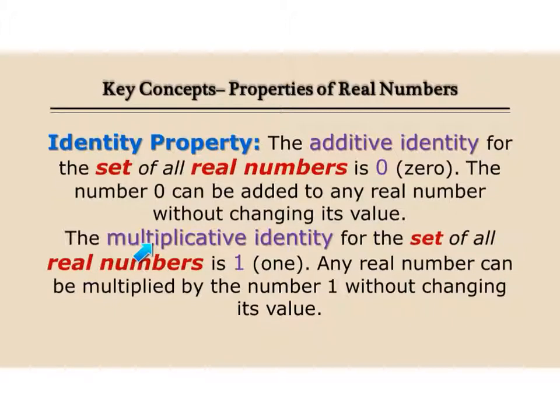In multiplication, the identity, the multiplicative identity is 1. I can multiply any number by 1 to get the same answer. I can't multiply by zero and get the same answer.